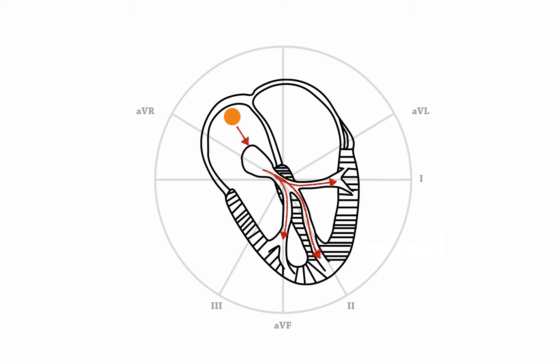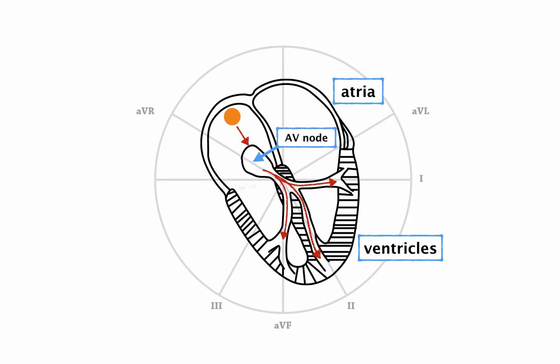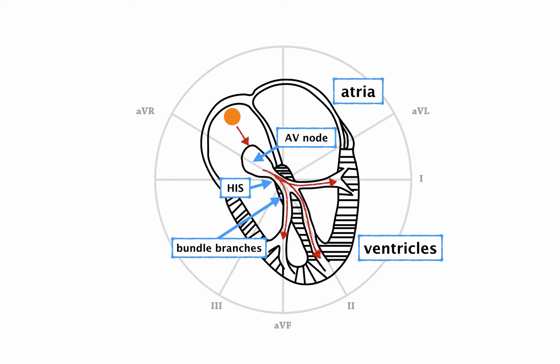The QRS complex is narrow if the impulse travels from the atria to the ventricles through the AV node, the bundle of His, and the bundle branches. So for example, if a patient has sinus tachycardia, meaning that the sinus node discharges at a rate of 100 beats per minute or above, when all the other bundles and fascicles in the ventricles are open, the QRS complex will be narrow, and the ECG will look something like in the next slides.